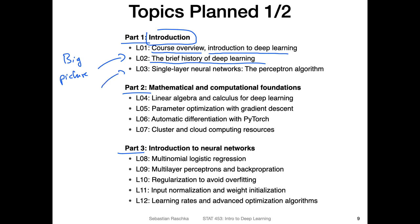We'll also talk about one of the early methods of machine learning: the single-layer neural network, or the perceptron algorithm. It's a very traditional algorithm, not commonly used nowadays, but I think it's an easy-going introduction to the problem of classification — putting things into different categories — and a good starting point.